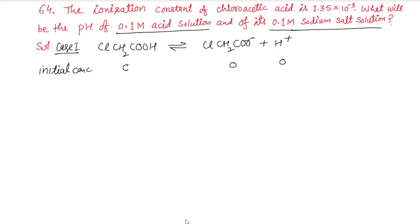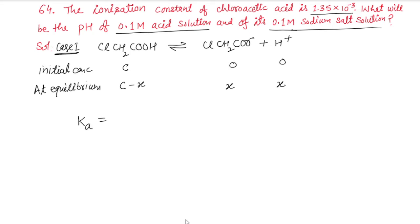Let us calculate the pH of the 0.1 molar acid solution. At equilibrium, out of concentration c, let's say x moles per liter dissociate, so chloroacetate becomes x and H⁺ also becomes x. The ionization constant is 1.35×10⁻³, which is very small, so c minus x can be taken as c.